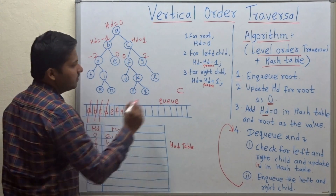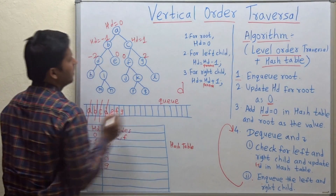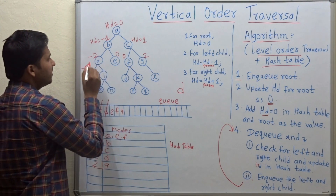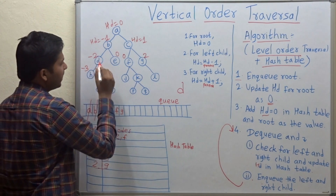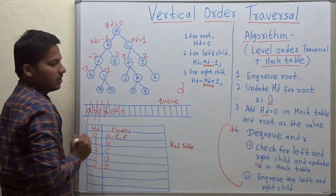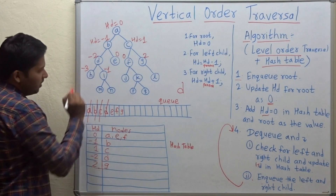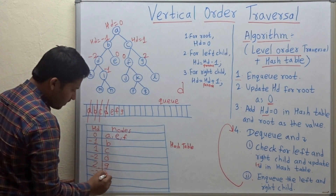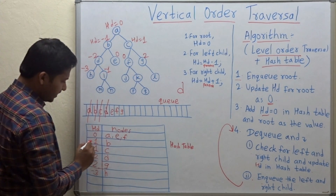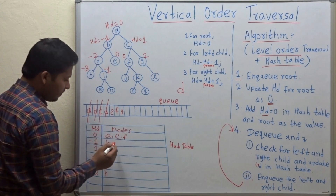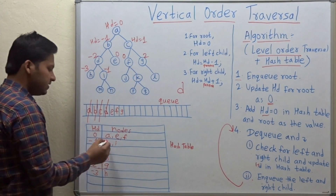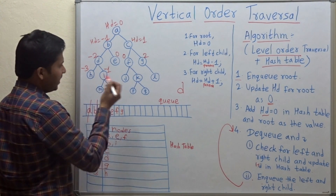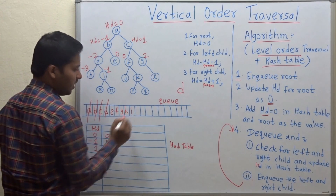Dequeue again — node d. Check left and right child: h and i. Horizontal distances are updated to minus 3 for h and minus 2 plus 1 = minus 1 for i. Update the hash table: for minus 3, the node is h. For minus 1, it's already present, so add i to that list. Then enqueue h and i.